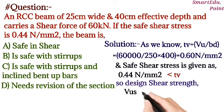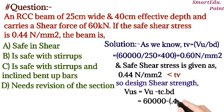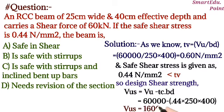Now as we know, the design shear strength Vus equals to Vu minus tau c into bd. So if you put these values, we will get design shear strength as 16,000 newton, that is 16 kilonewton.